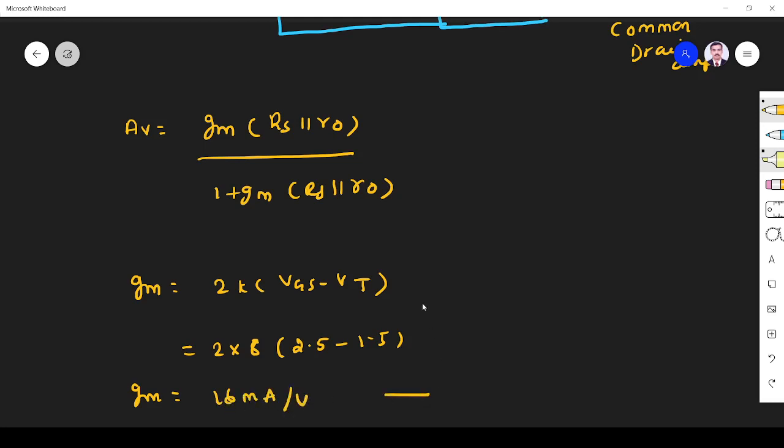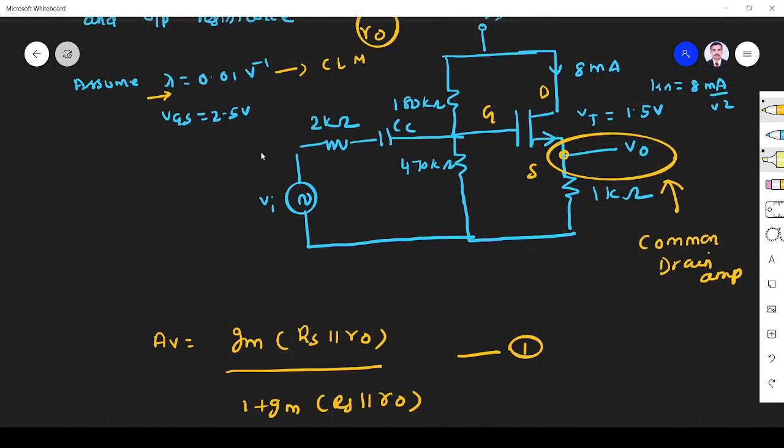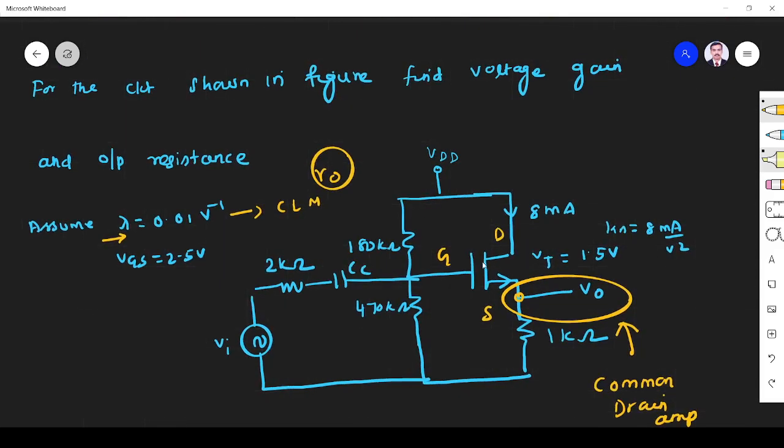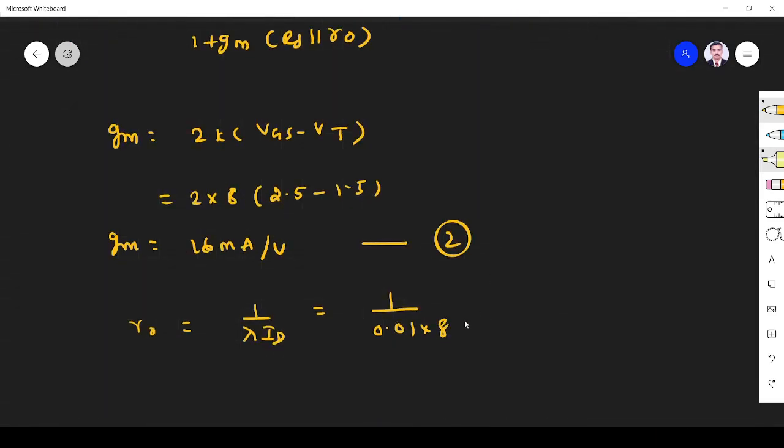Then ro we have to find. ro is equal to one by lambda times ID. Lambda they have given is 0.01. You see this is going down, the current flowing through this is ID, so that is 8 milliamps. So if you simplify what you get is 12.5 kilo ohm.